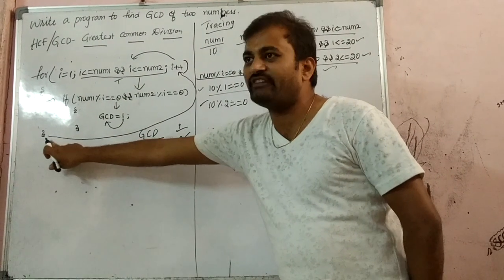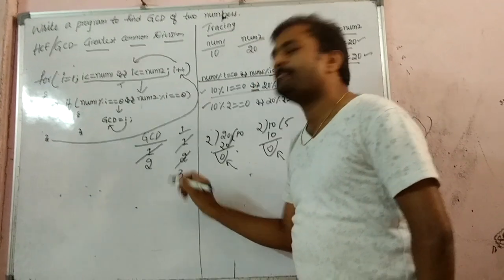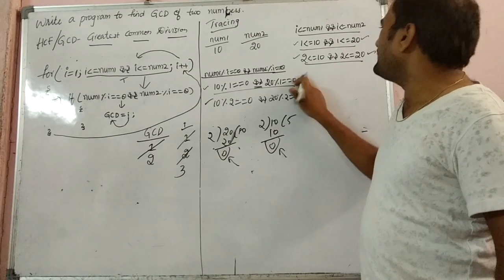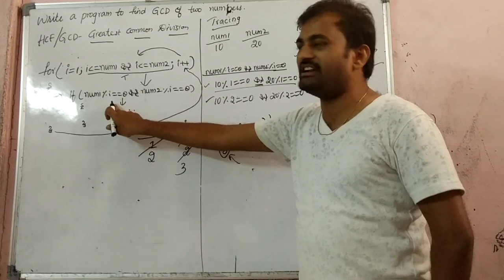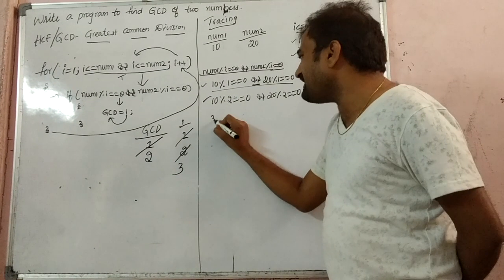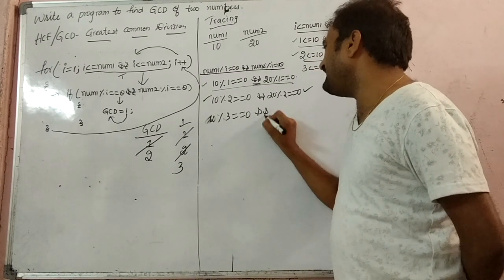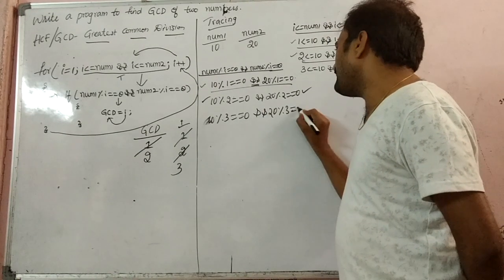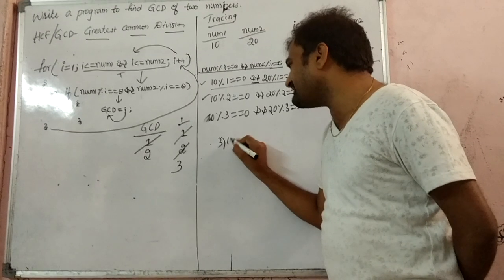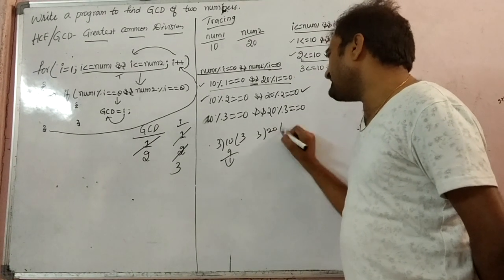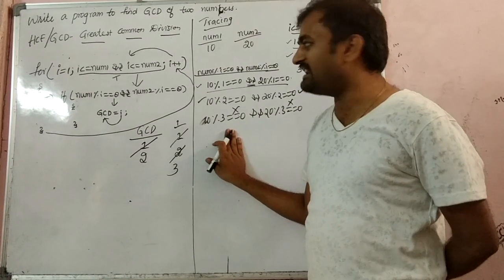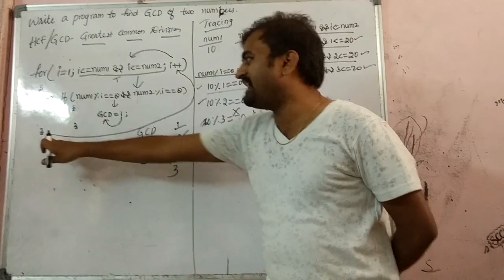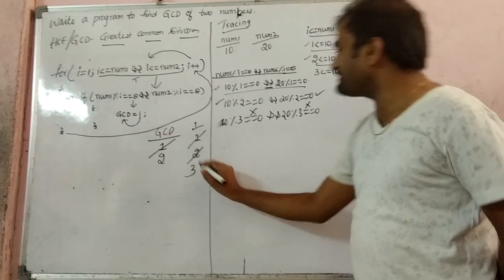And next we close, again end of for loop. i becomes 3. Now checking: 3 less than or equal to 10, AND 3 less than or equal to 20 — which is true. It enters into the if condition. If: 10 modulo 3 equals 0, and 20 modulo 3 equals 0. 3 goes into 9 with remainder 1, and 20 modulo 3 gives remainder 2. This is false and this is false — so the output is also false in logical AND. It will not enter, so if is closed, reaches end of for loop, goes back to i++. i becomes 4.